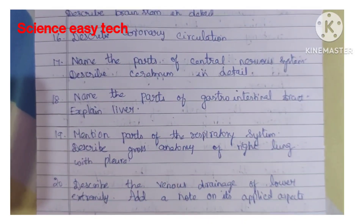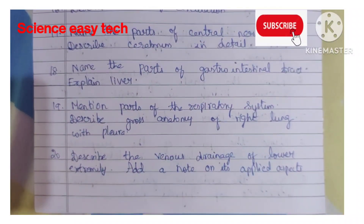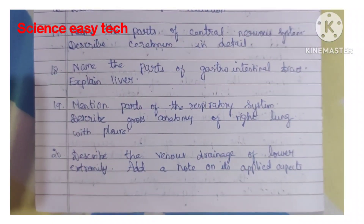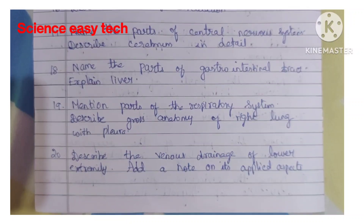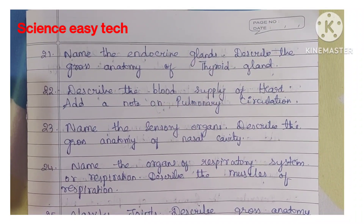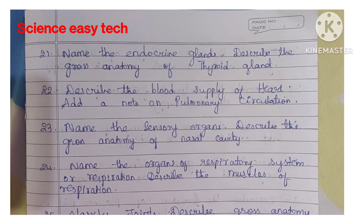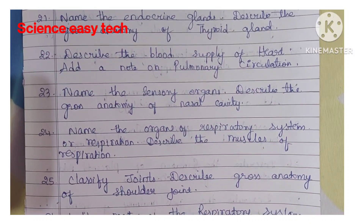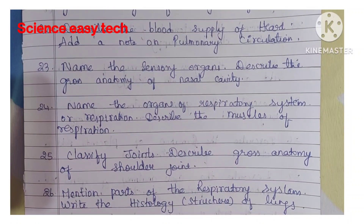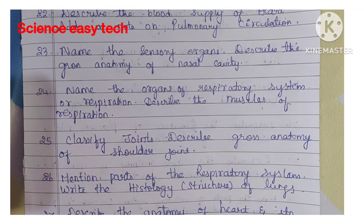Twentieth question, describe the venous drainage of lower extremity and add a note on its applied aspects. Twenty-first question, name the endocrine glands and describe the gross anatomy of thyroid gland. Twenty-second question, describe the blood supply of heart and add a note on pulmonary circulation. Twenty-third question, name the sensory organs and describe the gross anatomy of nasal cavity.